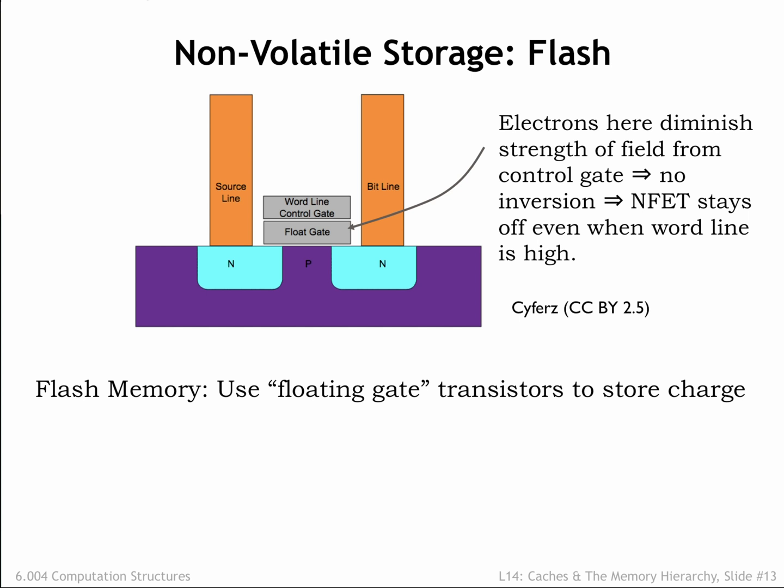If there is a charge stored on the floating gate, a higher voltage V2 is required to turn on the MOSFET. By setting the gate terminal to a voltage between V1 and V2, we can determine if the floating gate is charged by testing to see if the MOSFET is conducting.